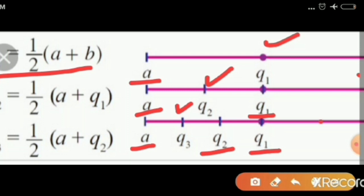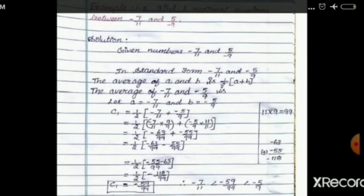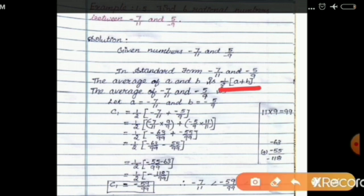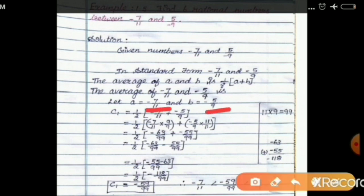Similarly, the average between Q1 and B gives Q4, the average between Q1 and Q4 gives Q5, and the average between Q4 and B gives Q6. In this way, we can find many rational numbers between any two rational numbers. Let us apply this to the same example: find six rational numbers between minus 7 by 11 and 5 by minus 9, which in standard form is minus 5 by 9. So A equals minus 7 by 11 and B equals minus 5 by 9.